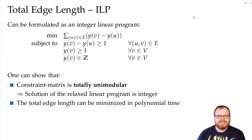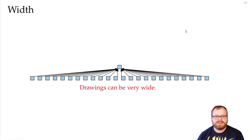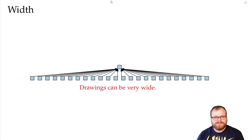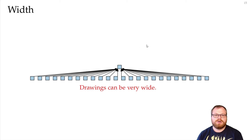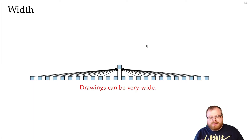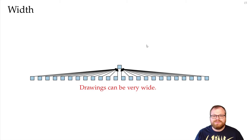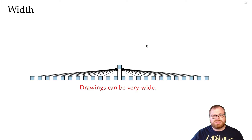The problem is that if we only minimize total edge length or total number of layers, our drawings can become very wide. So while we avoid tall drawings, the result still may not look good. Instead, we can also minimize the width of the layers, or constrain: I don't care how high everything is, but I want at most 10 vertices per layer, since I can scroll up and down but not in two dimensions.